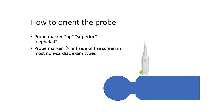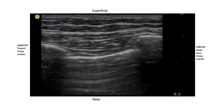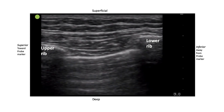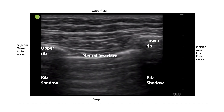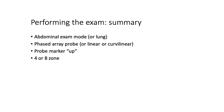The way to orient the probe involves putting the probe marker up or toward the patient's head, and remember that corresponds with the left side of the screen. Here's our typical view. Key structures include the upper and lower ribs along with their shadows, the pleural interface with sliding shown, and the chest wall. In summary, we'll use the abdominal exam mode with the phased array probe, probe marker pointed up, and a four- or eight-zone protocol.